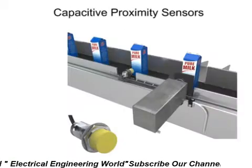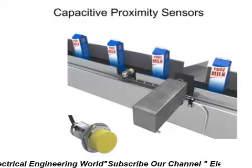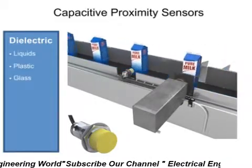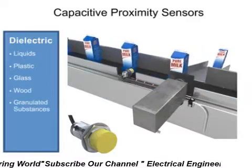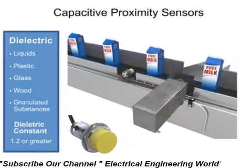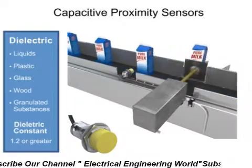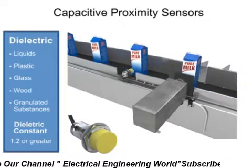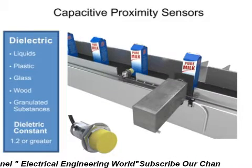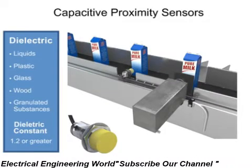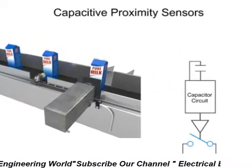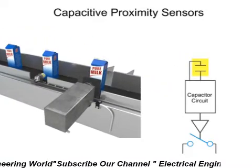Capacitive proximity sensors, on the other hand, can detect dielectric materials such as liquids, plastic, glass, wood, and granulated substances, as long as the material has a dielectric constant of 1.2 or more. Their range is from 3 mm to 15 mm depending on the dielectric material to be detected. Two small plates located in the front of the sensor form a capacitor.